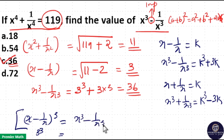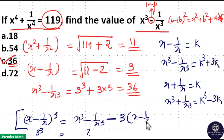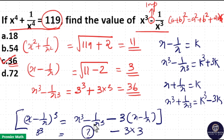That is 3k is equal to x cube minus 1 by x cube. x cube minus 1 by x cube, which you have to find, minus 3 into x minus 1 by x. So, this is equal to 3 into x minus 1 by x equal to 3. Now, from this we can find the value of x cube minus 1 by x cube, which is equal to 3 cube plus 3 into 3, which is 36.